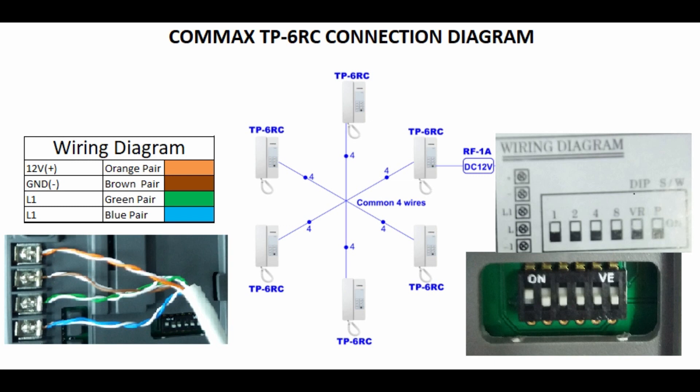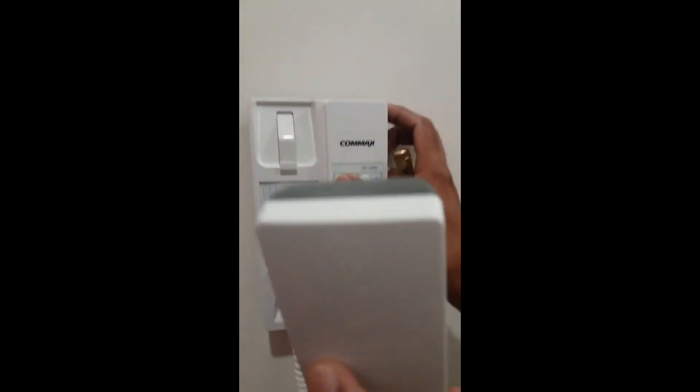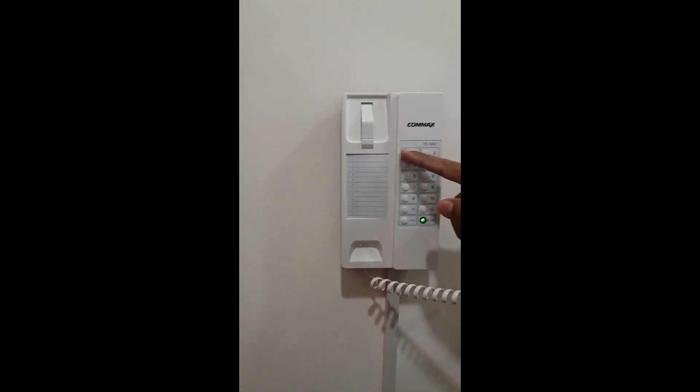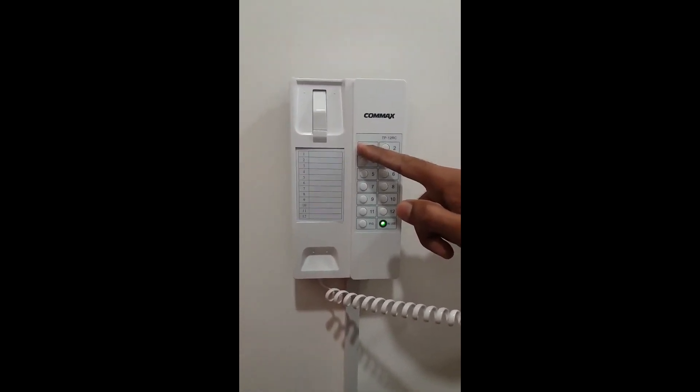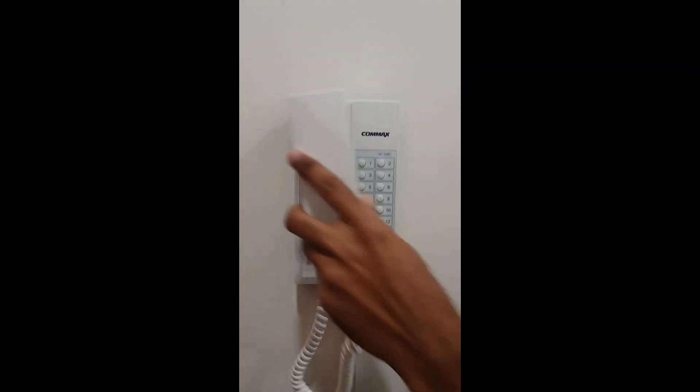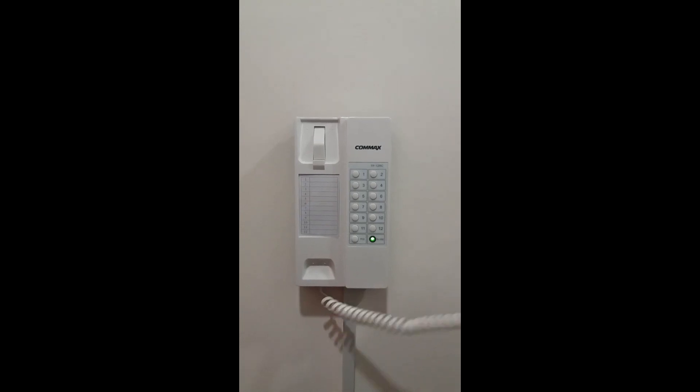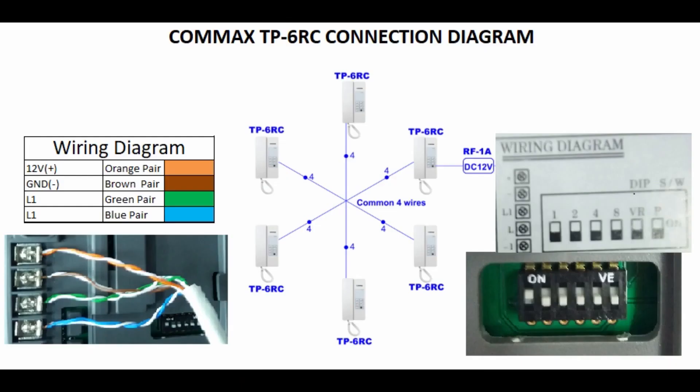If you need to make a call from the first station, that means number one, to fifth station, you need to go to the first station and take the receiver and press number five and hold on. Press it and hold on. You can hear the ringing.